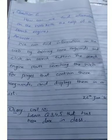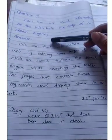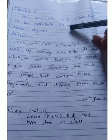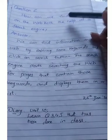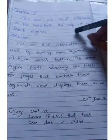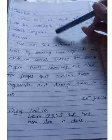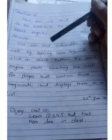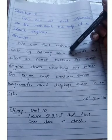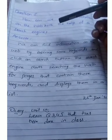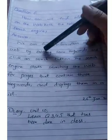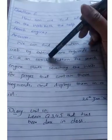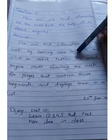Question number 5 is: how can we find information on the web? With the help of a search engine. Search engine کو use کرتے ہیں۔ آپ کو پتا ہے Google is a search engine۔ We can find information on the web by entering some keywords. آپ Google کے اوپر لکھیں — a لکھیں تو a سے related جتنی بھی keywords اور websites ہوتی ہیں وہ سب نیچے list آ جاتی ہے۔ Search button کے اوپر keywords سے click کرتے ہیں۔